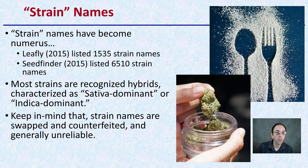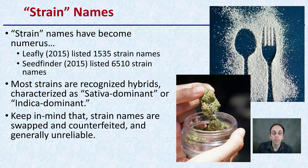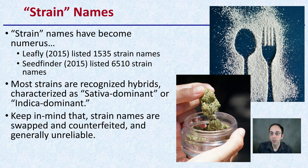Now, the strain names. Strains have become numerous. Leafly in 2015 listed about 1,535 strain names. Seed Finder in the same year listed 6,510 strain names. Most strains are recognized as hybrids characterized as sativa dominant or indica dominant. Keep in mind that strain names are swapped and counterfeited and generally unreliable — kind of like how wind can come through a sandy or sugary surface and change how it looks completely. That's sadly what we're having with these various strain names in cannabis.